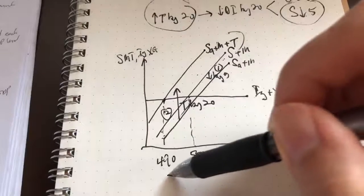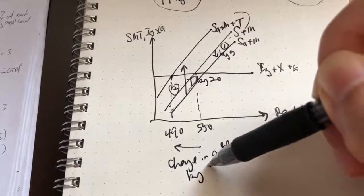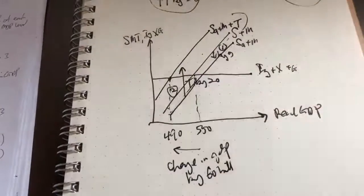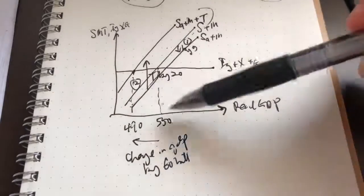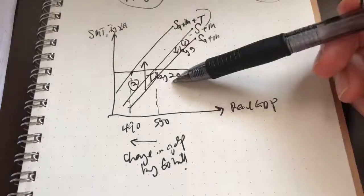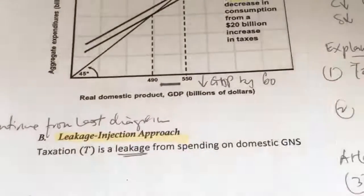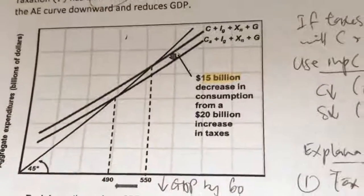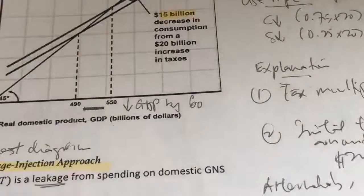A change from 550 to 490 is a change in GDP of 60 — 60 billion. As you can see here, we can also show the tax multiplier effect from this diagram. Change in GDP is 60 billion, change in tax is 20, so 60 over 20 gives you a multiplier of 3. Regardless of whether you use the leakage injection approach or the Keynesian cross, we are able to show the effect that tax has on real GDP and calculate the multiplier.